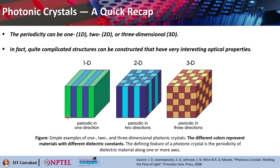Always remember: the different colors represent materials with different dielectric constants. In 1D, it is very clear that you just have the periodicity in one dimension — the material is uniform in the other two dimensions. When you go for 2D photonic crystals, you basically have columns of two different materials which are repeated along two dimensions. And for 3D, you have small cubes of different materials which are periodically repeated in all three axes or all three dimensions.